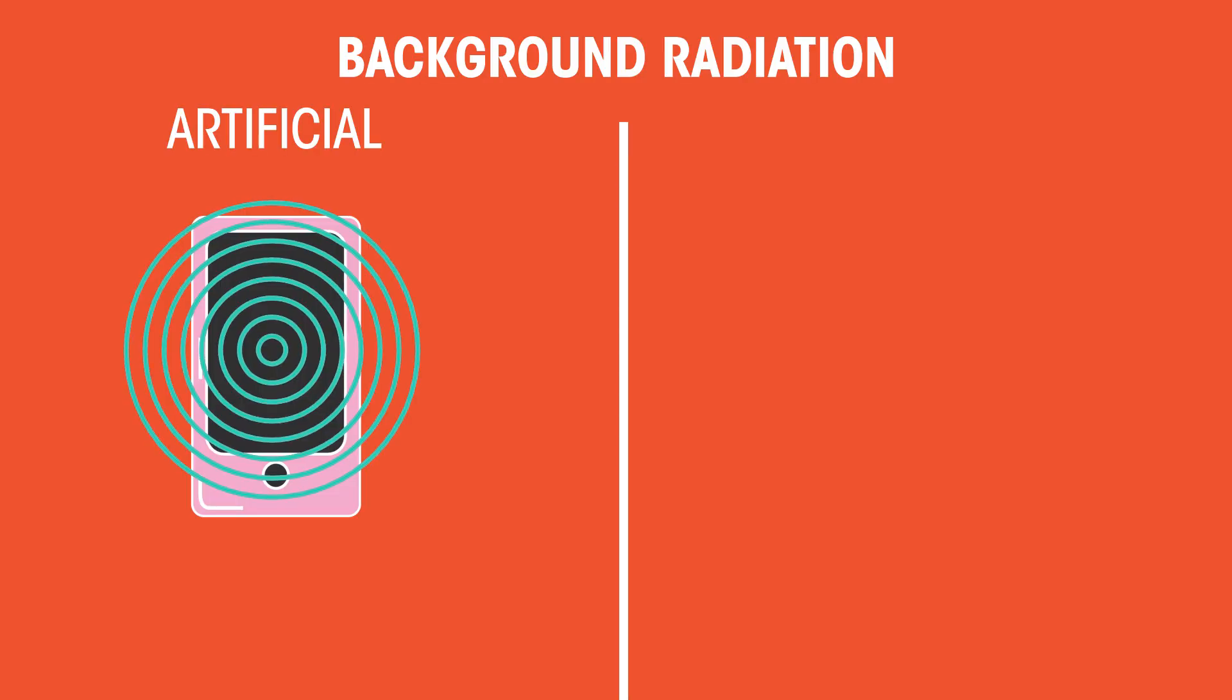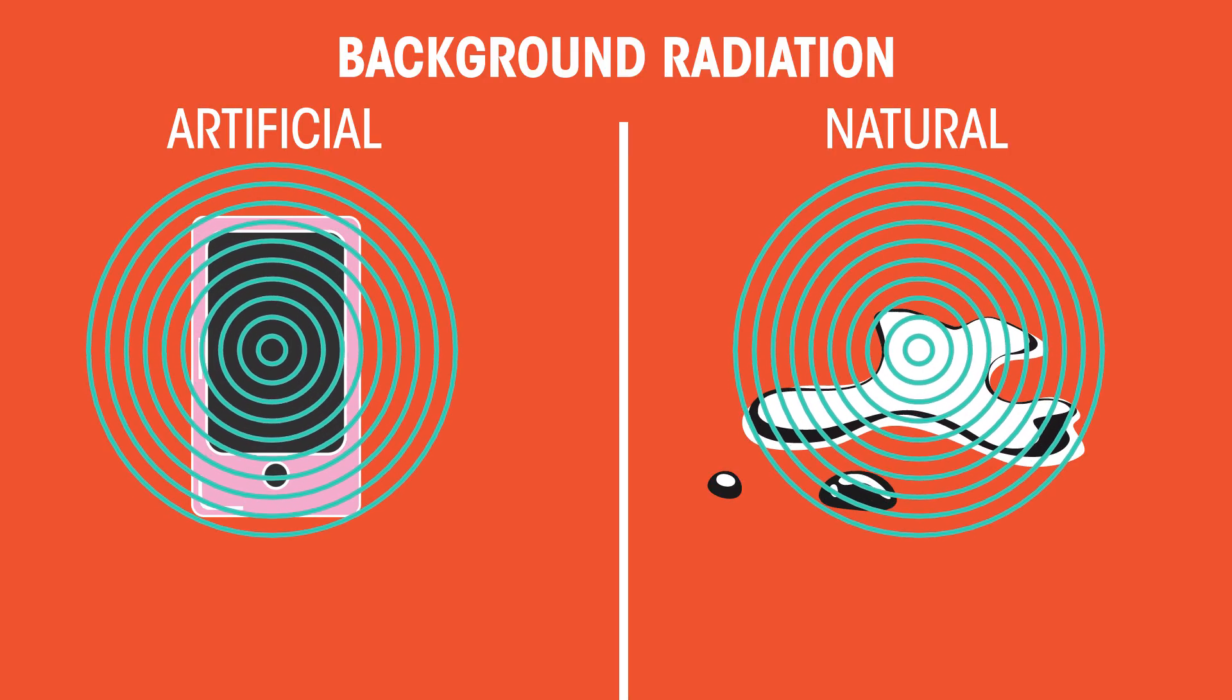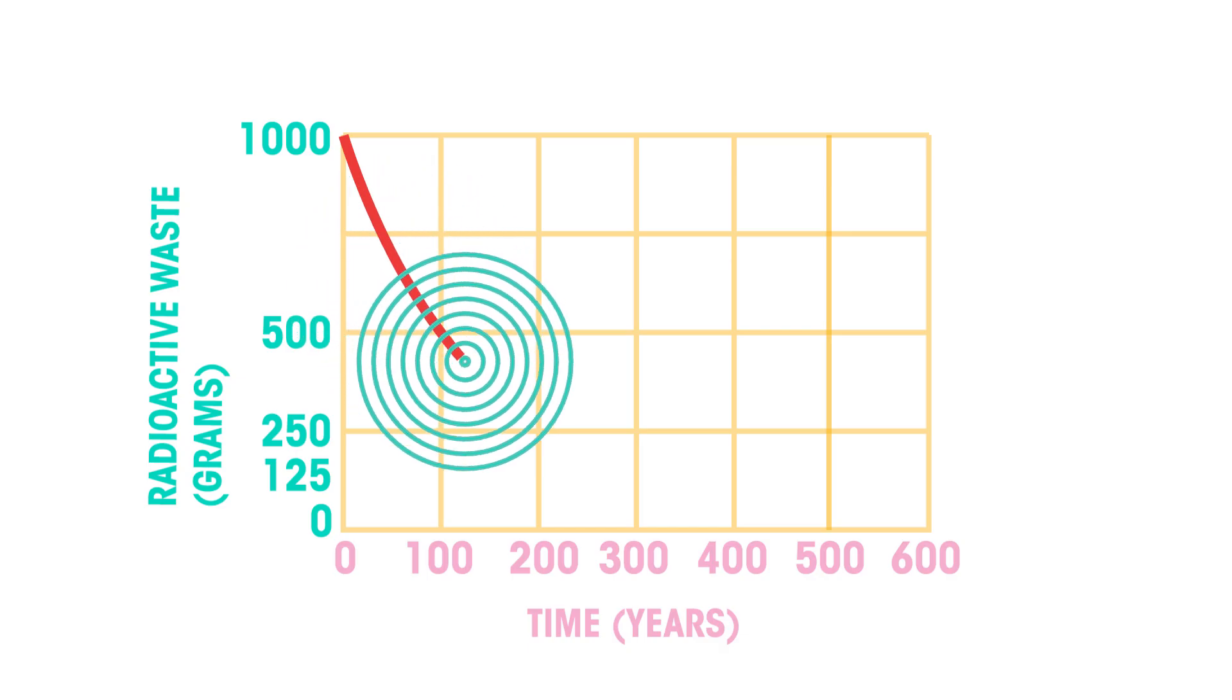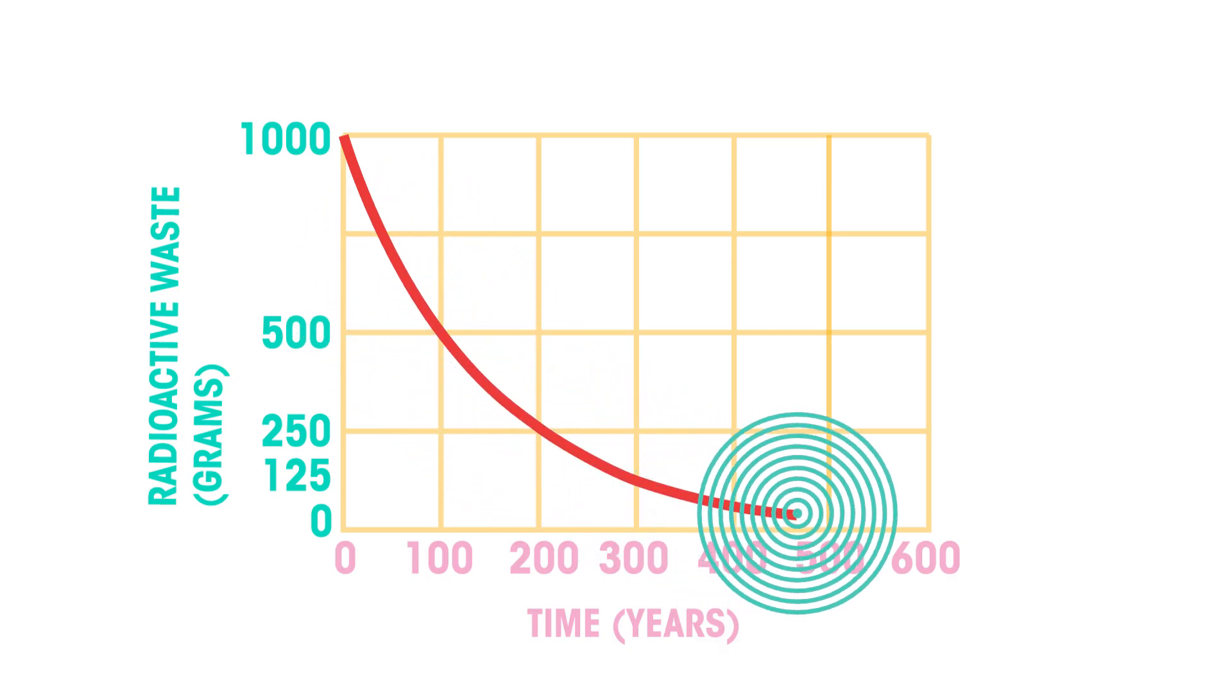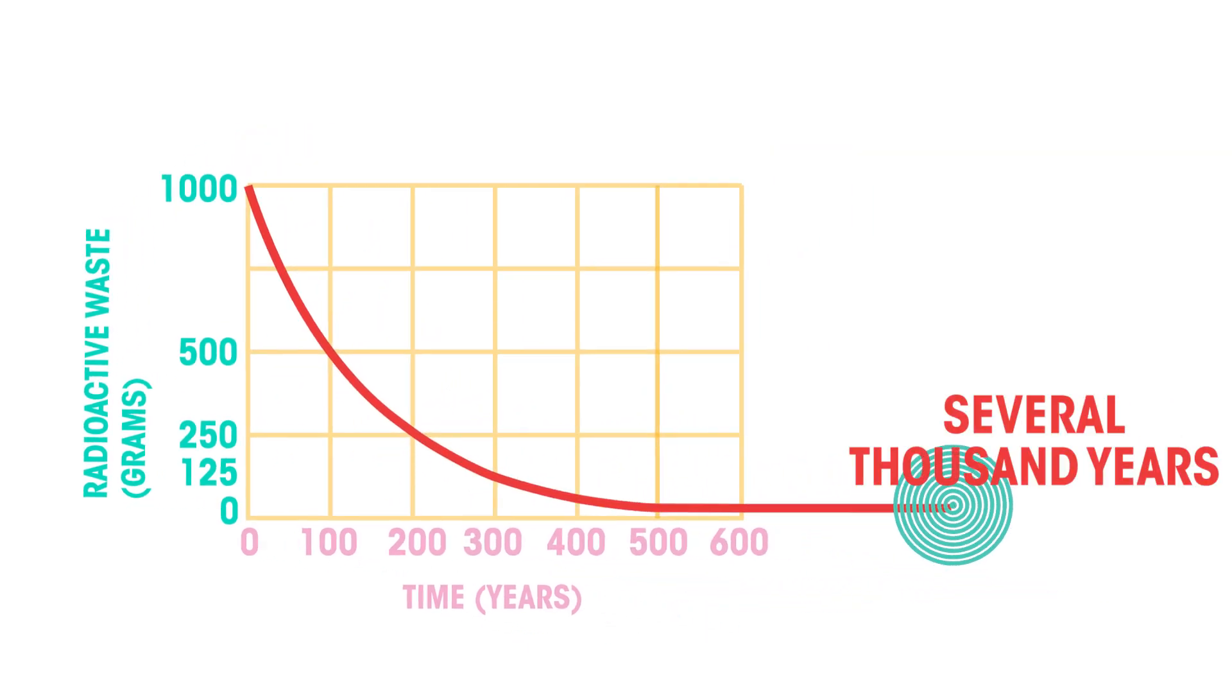Background radiation comes from artificial and natural sources around us that we experience daily. It is low in magnitude, so it isn't harmful. However, for some radioactive wastes to reach this low background level, it may take several thousand years.